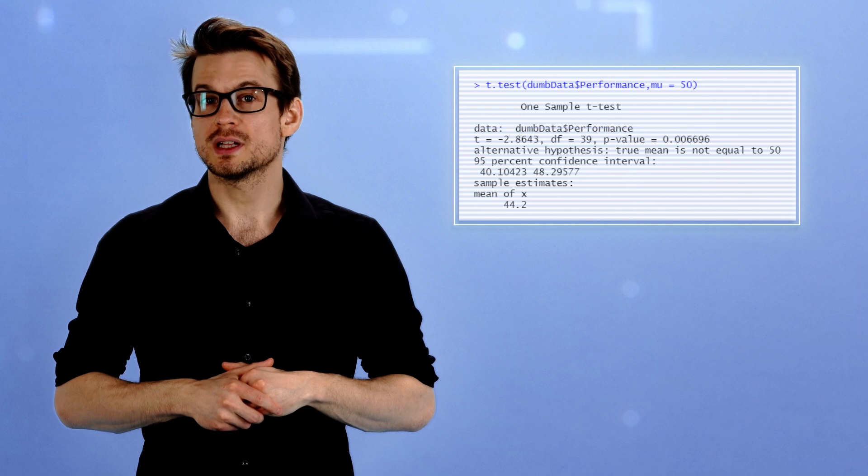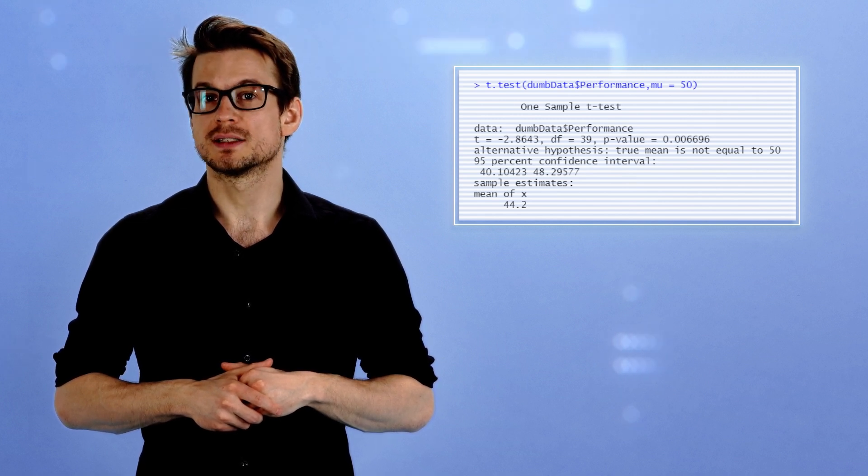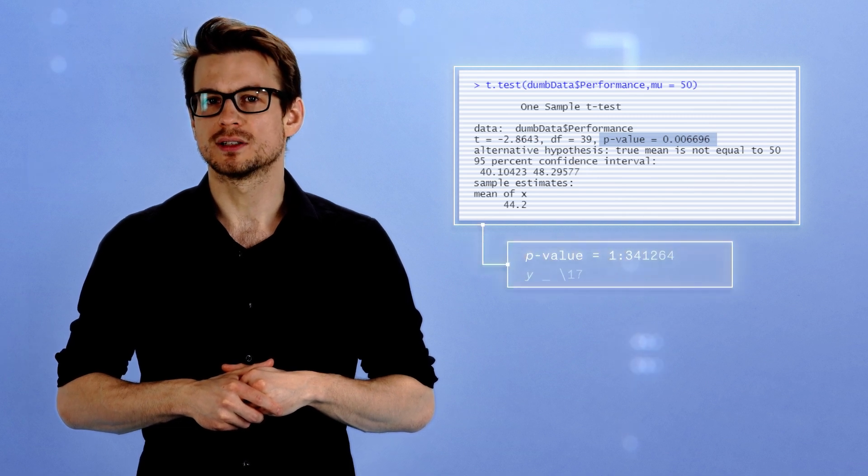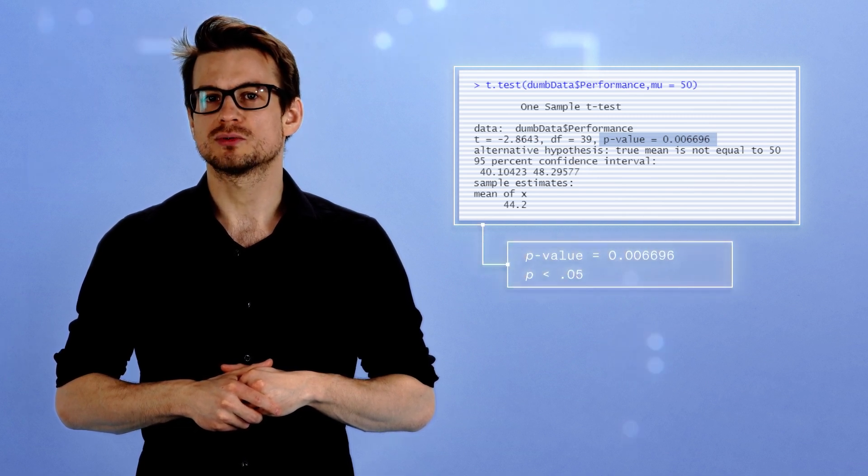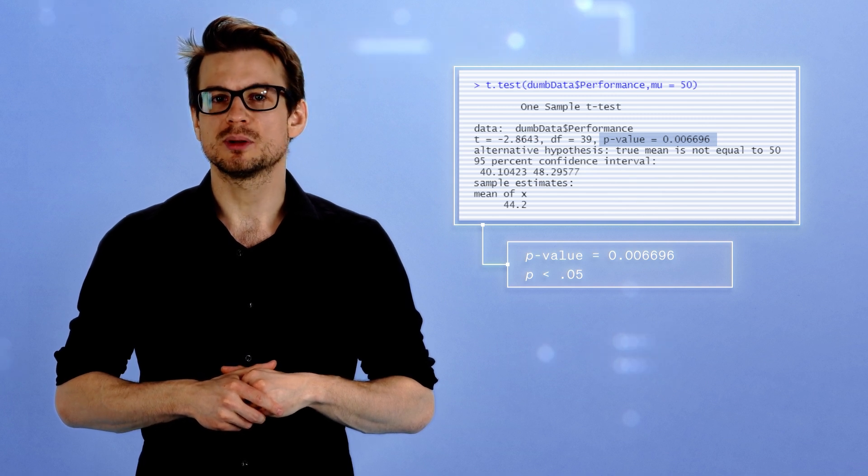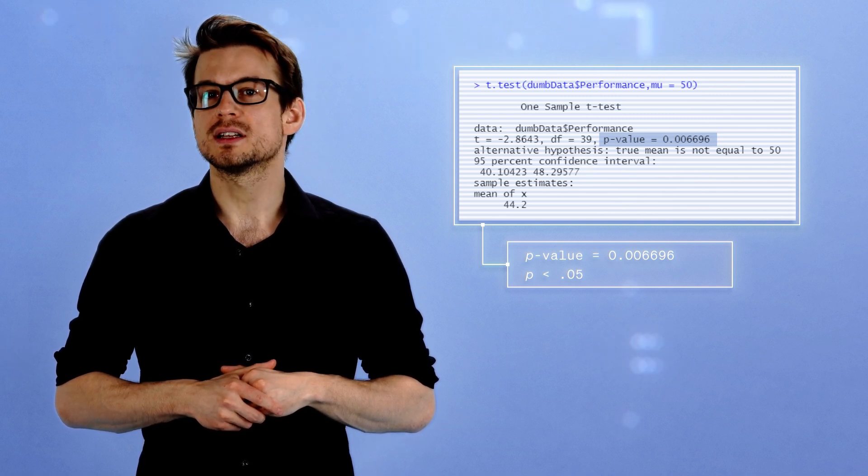You compute a frequentist one-sample t-test in R and it yields a test statistic of minus 2.86. The p-value for the test statistic is about 0.007, which falls under the alpha rejection criterion of 0.05. This means that the difference between the sample mean and the reference value is statistically significant.